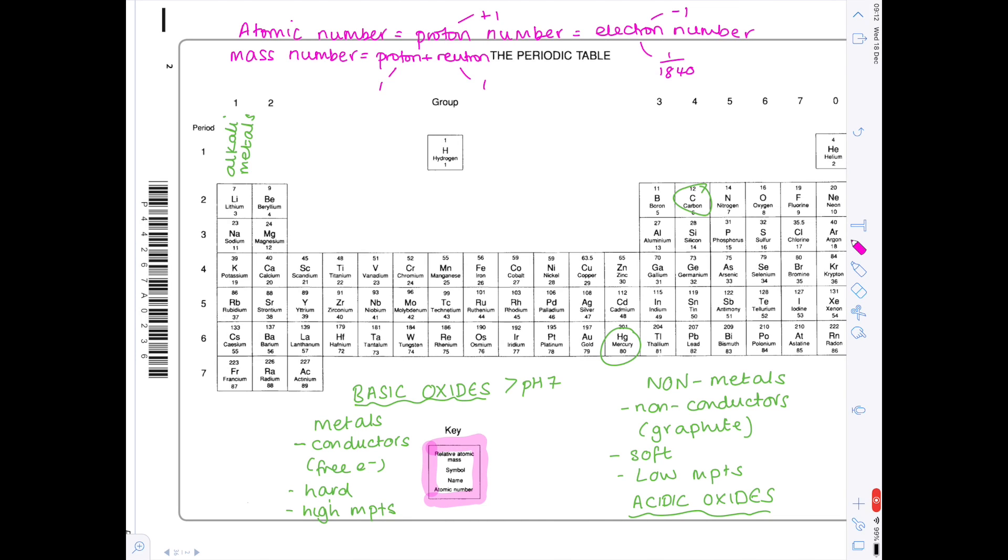Electrons have a tiny mass and therefore are not counted in the mass number. So if we have a look at an example, how about fluorine? What is its atomic number? Well according to the key it is 9. What is its mass number? Well according to the key that is 19. Now we can start working out extra things. So what about the proton number? Well I've already said that the atomic number is the same as the proton number, so therefore fluorine's proton number is 9. What is its electron number? Well because I've said it's the same as the proton number, it's also 9.